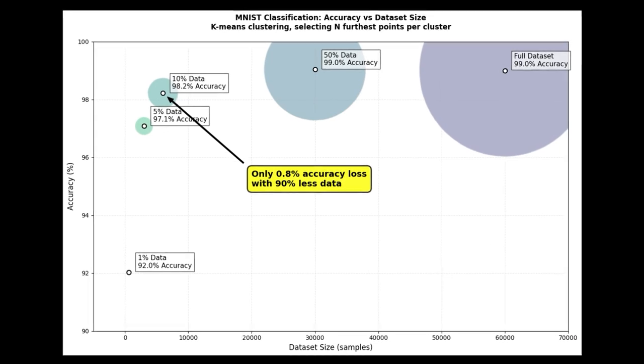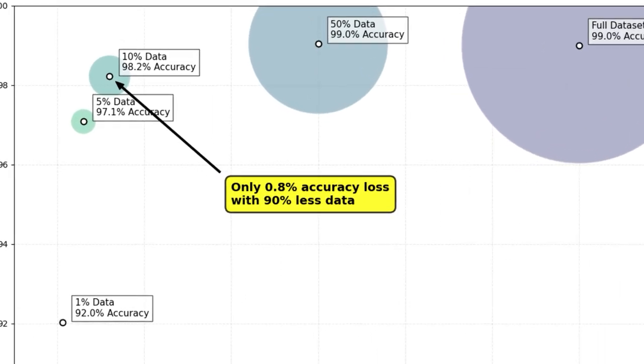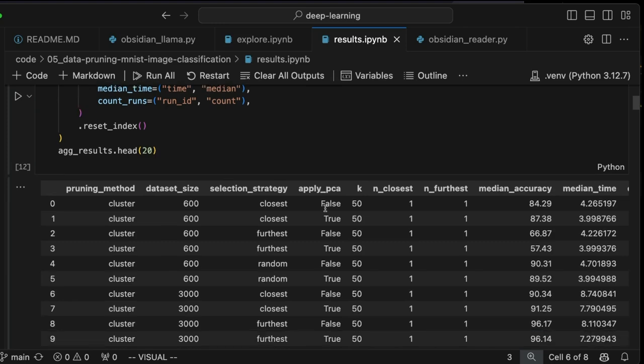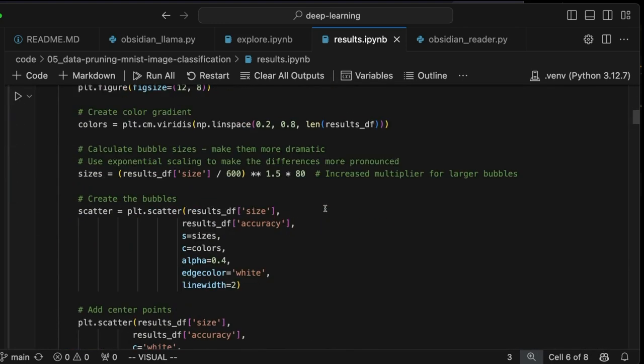What if I told you that using only half your data could still give you just as good accuracy as if you trained on the full data set? Well, in my recent experiments on MNIST data, that's exactly what happened.